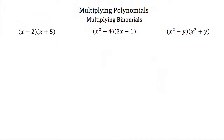Now that we know how to multiply a polynomial by a monomial, let's talk about multiplying binomials. These are basically multiple-term polynomials multiplied together. You can use the FOIL method. The FOIL method states that you multiply the First terms in each binomial together, then the Inside terms of the multiplication, next the Outside terms, and then the Last two terms.